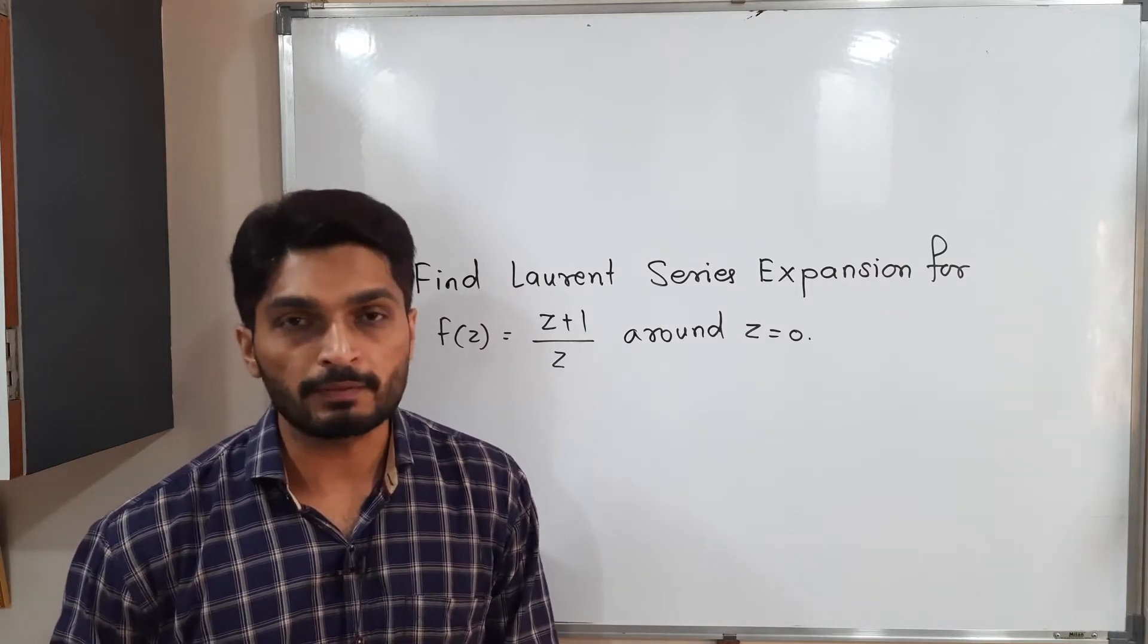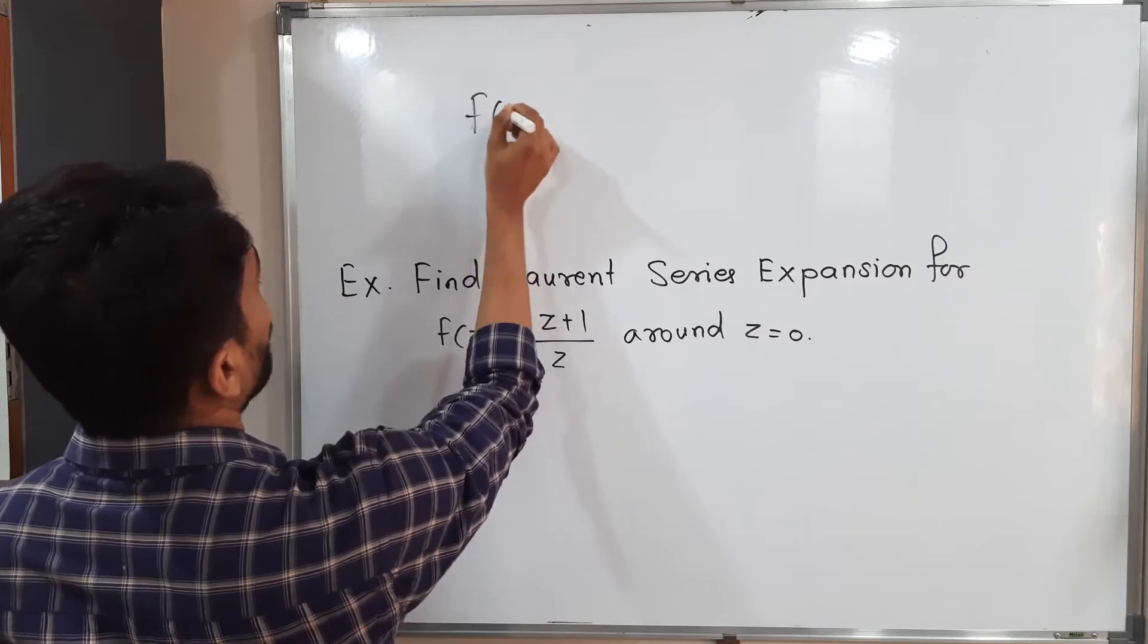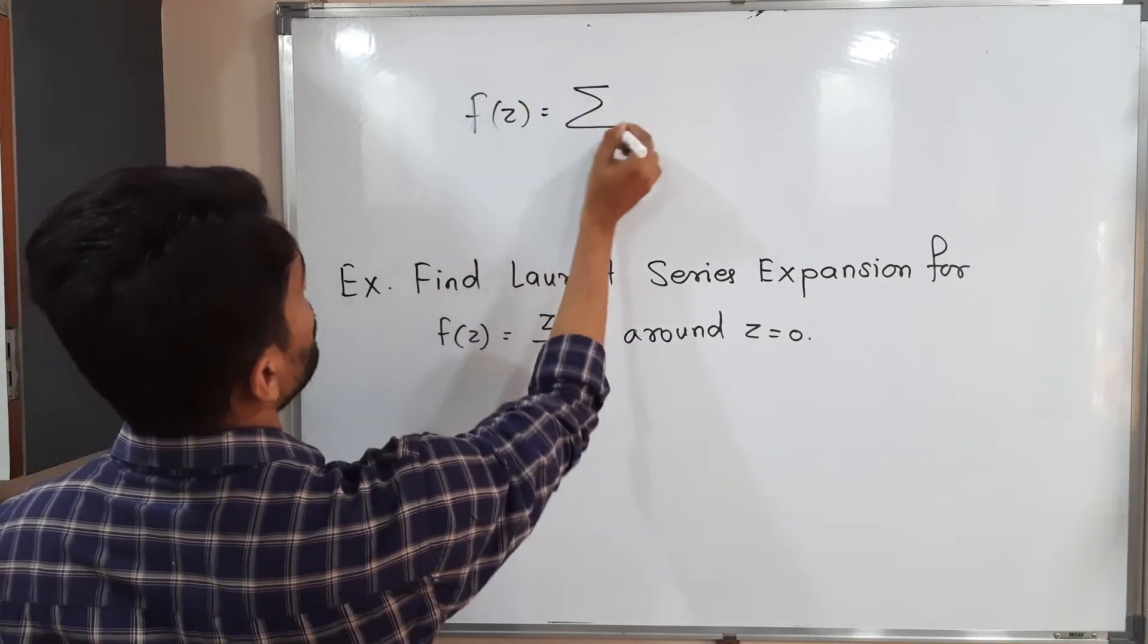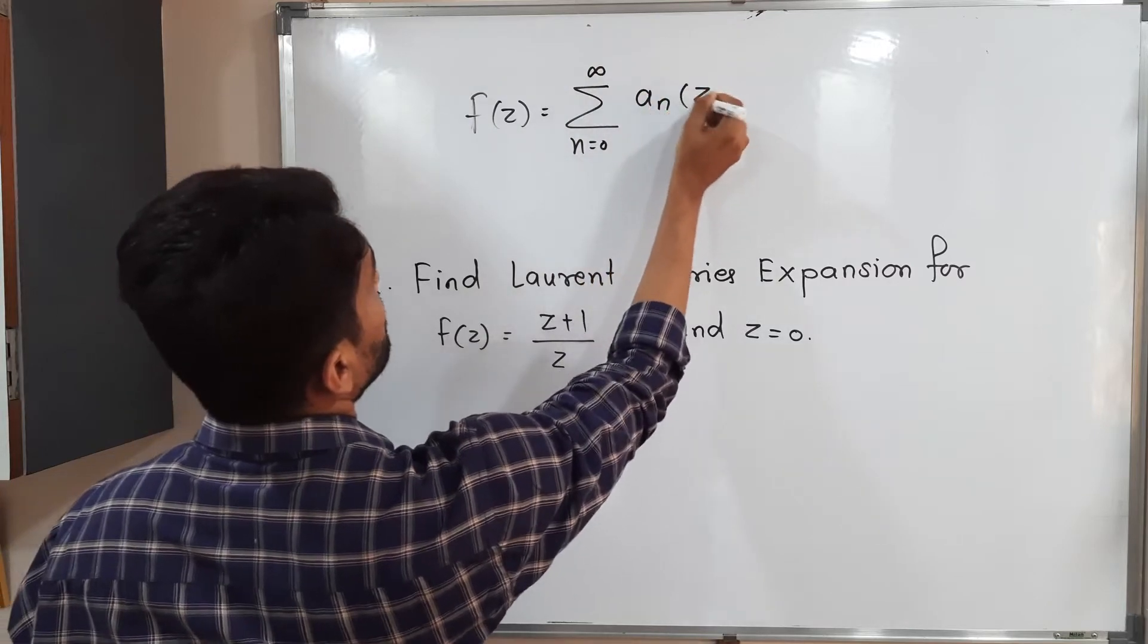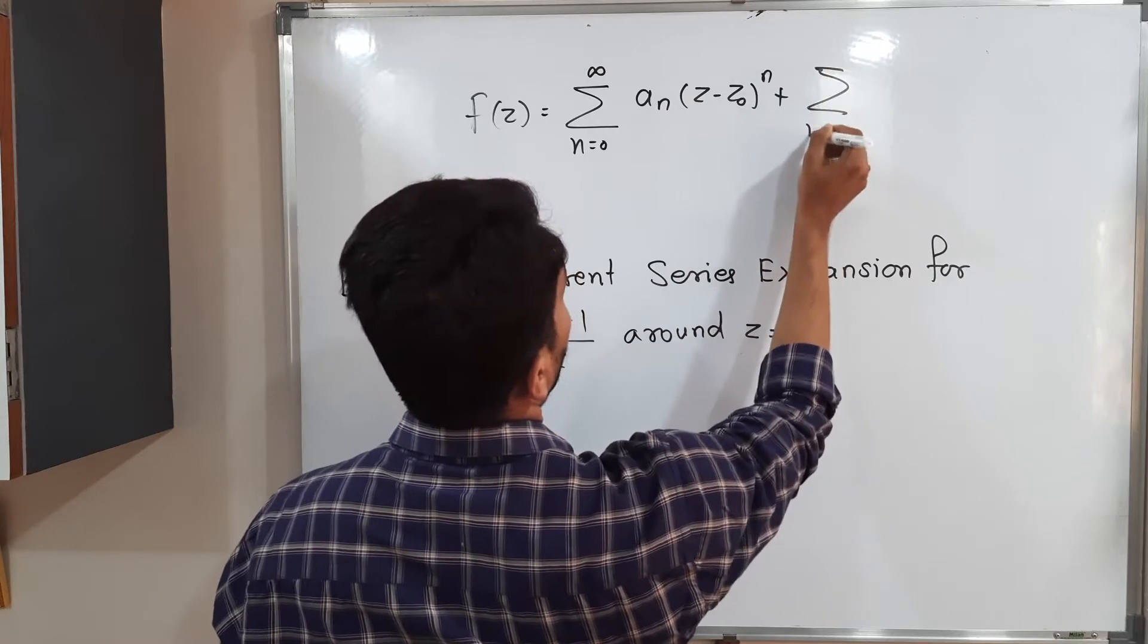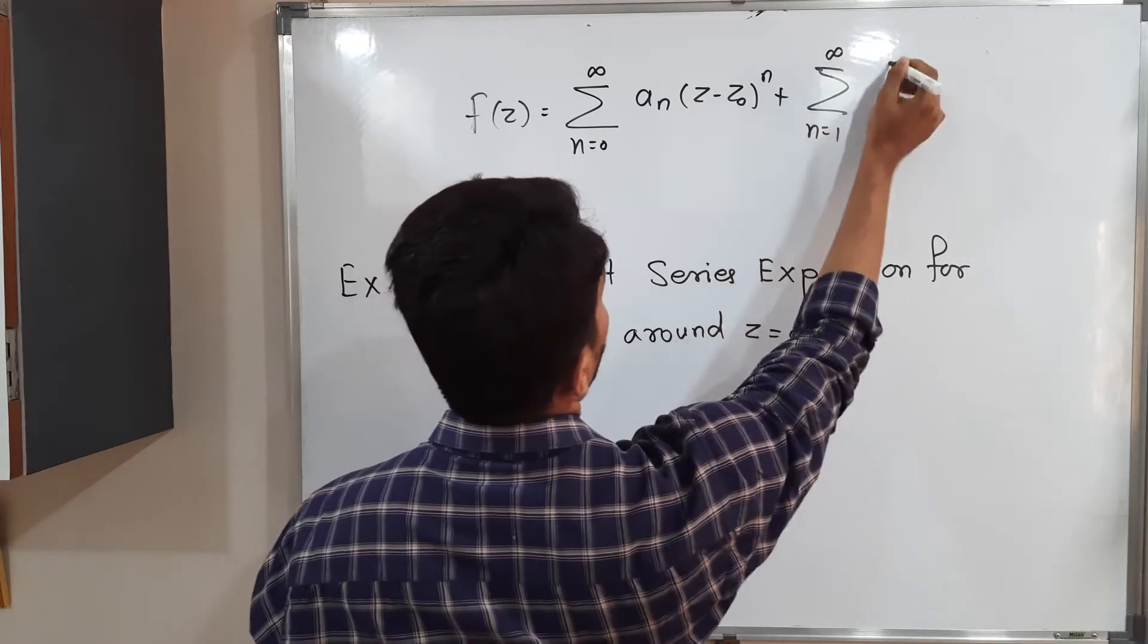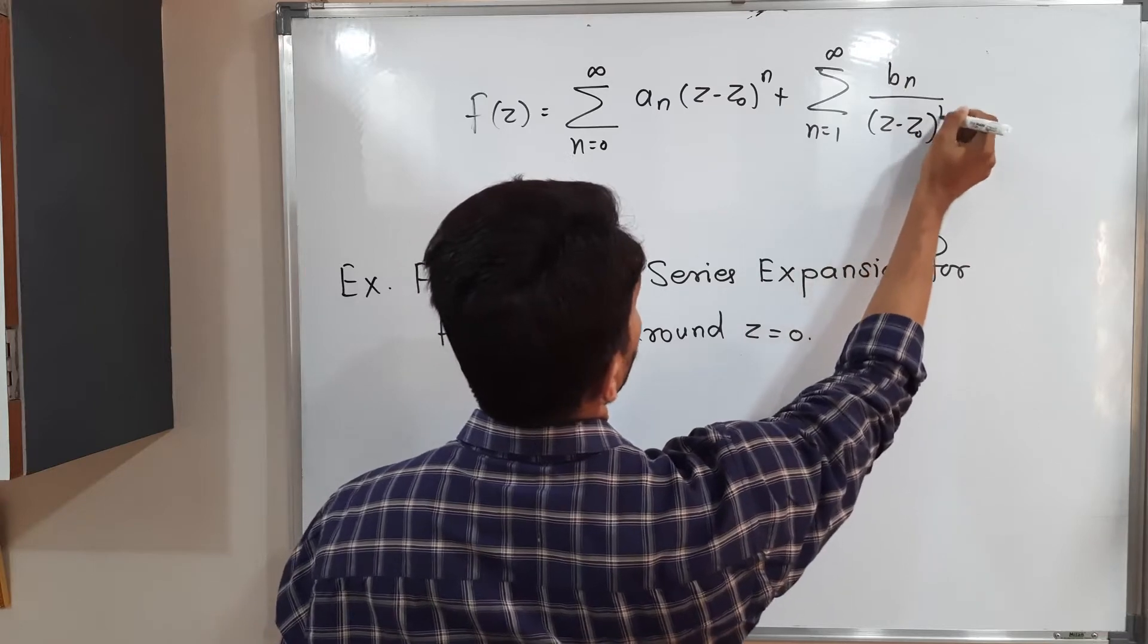The Laurent series we have already discussed in previous videos. I will write its standard form: f of z is equal to summation n running from 0 to infinity an z minus z0 raised to n plus summation n running from 1 to infinity bn upon z minus z0 raised to n.